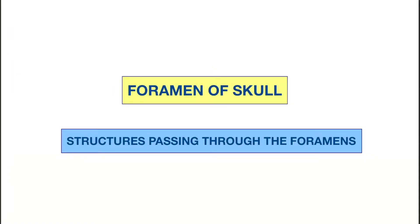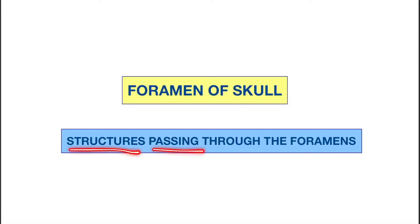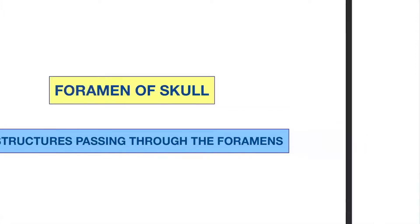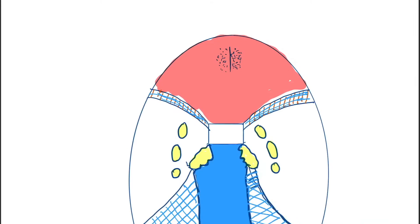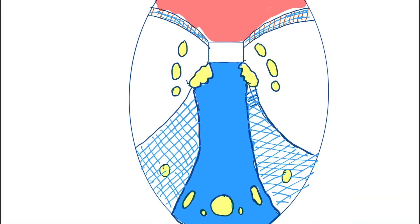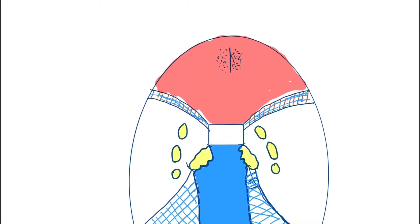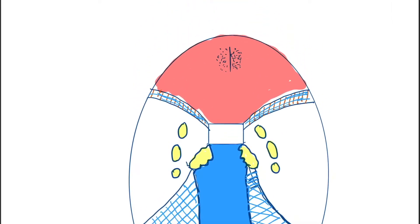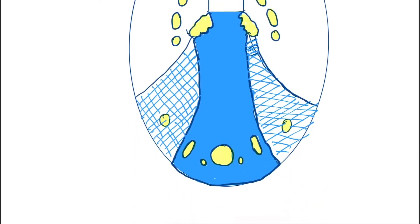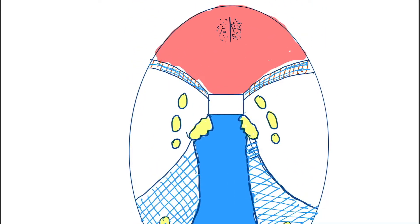Hello friends, today we are going to discuss the foramina of the skull and the structures passing through them. Here you can see a schematic diagram of the base of the skull. We will discuss all the parts of the foramina of the skull, then we will discuss every structure passing through these foramina.